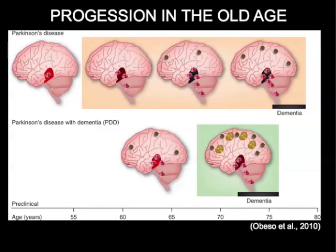Lewy bodies accumulate in the brainstem first — stages one and two — then in the substantia nigra, then the cortex. In old age, you might have someone who presents with all the stages together because in old age you have the disease pathology, plus vascular problems and lesions, plus the effects of aging — all together, and they will come to you already combined. That's why it's very hard to deal with this subject when the onset is later in life.